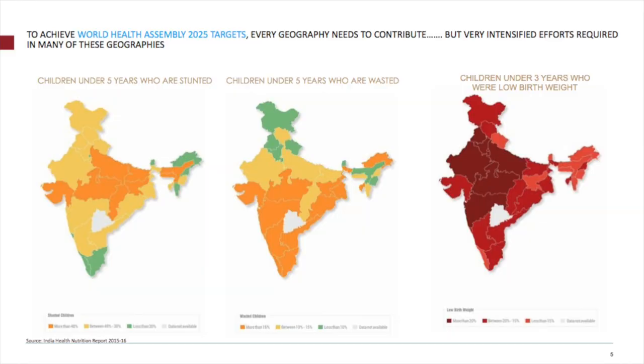Looking at the RSOC data released recently, stunting and wasting are a problem across most states — it's not just a few states with a bigger burden. The most telling indicator is low birth weight, which is a proxy for maternal nutritional status. Thank you so much. I hope these three slides could add some spices to the discussion around this complex recipe.